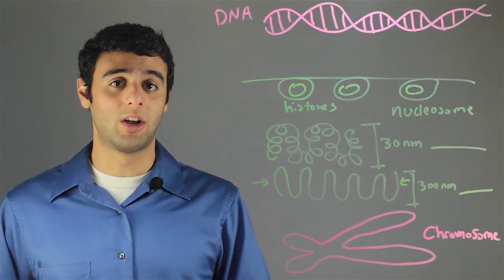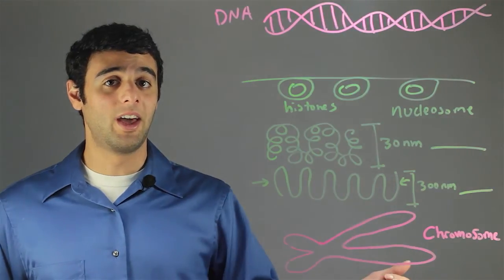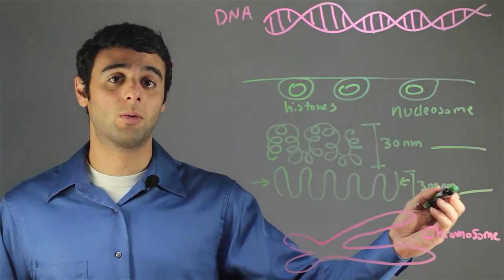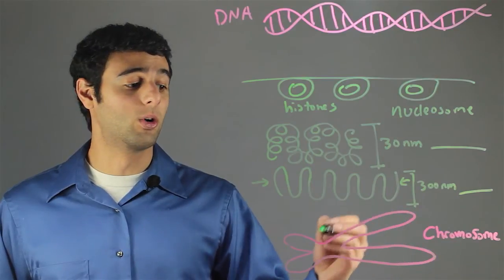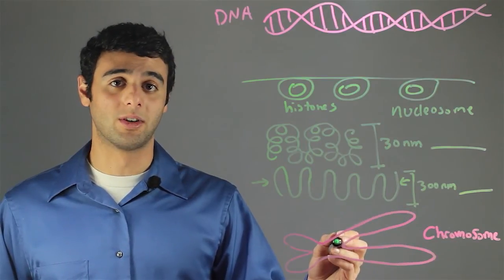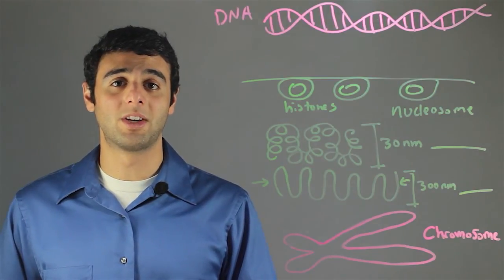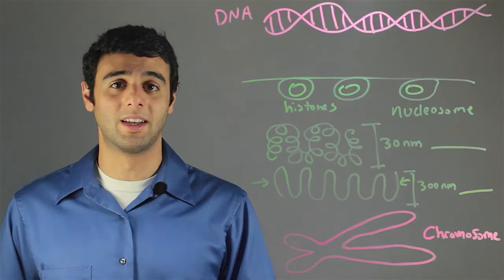And then, this 300 nanometer wide fiber will be used to make our ultimate product, the chromosome. This is Michael Mehta, and this has been Explaining the Formation of a Chromosome from DNA.